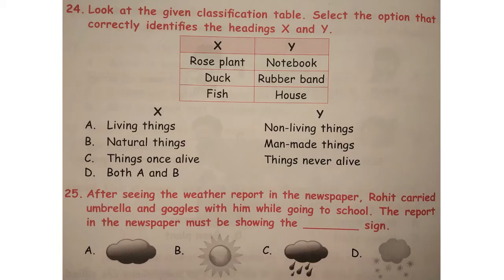Look at the given classification table. Select the option that correctly identifies the heading X and Y. The correct answer is option D.